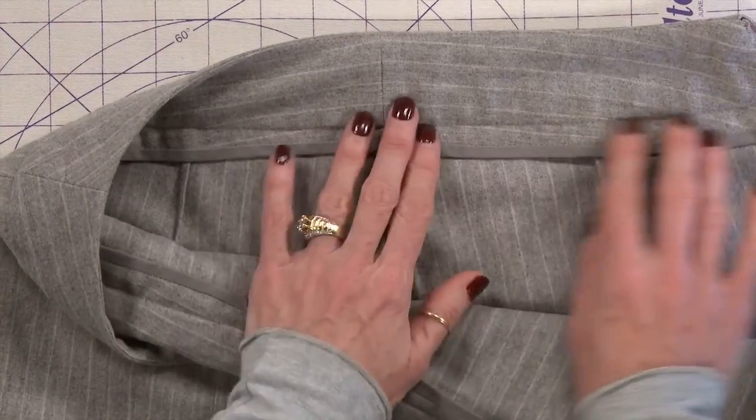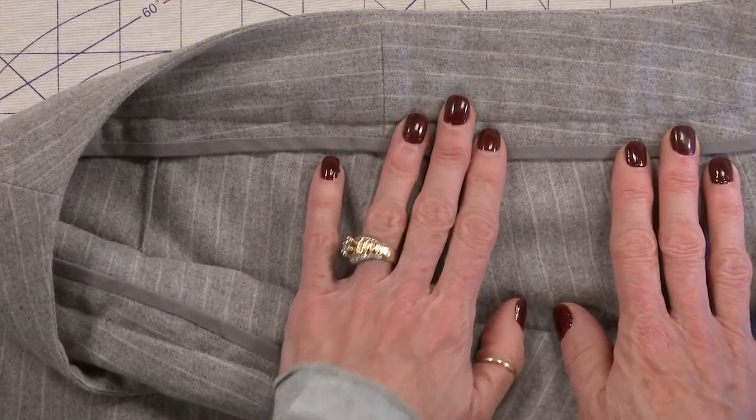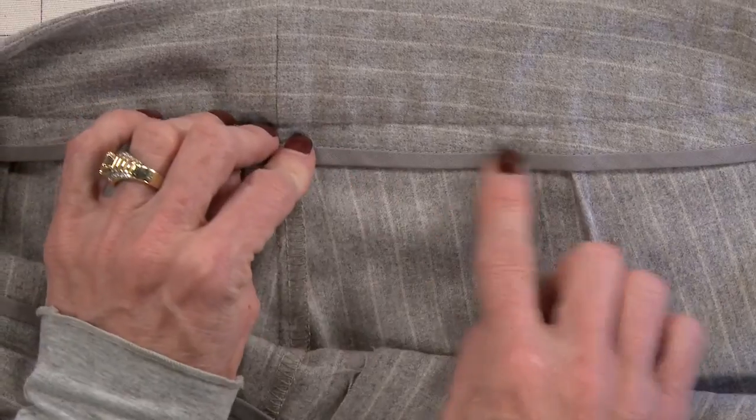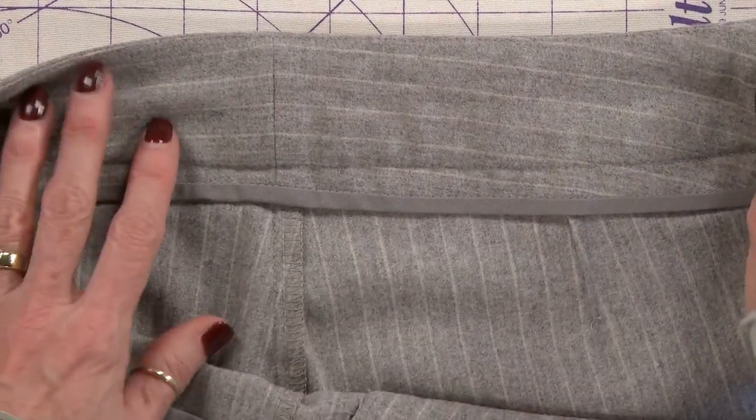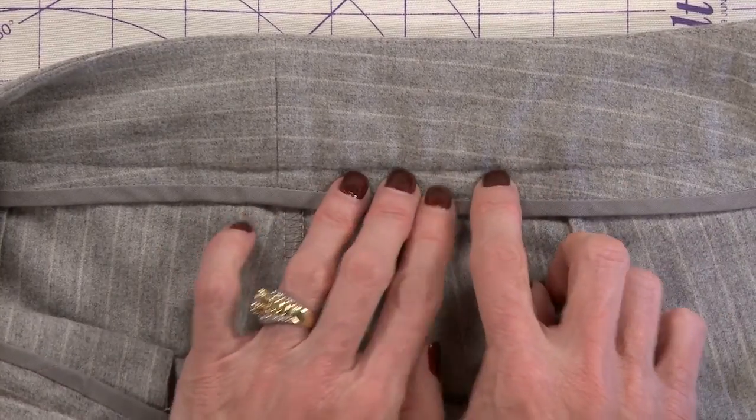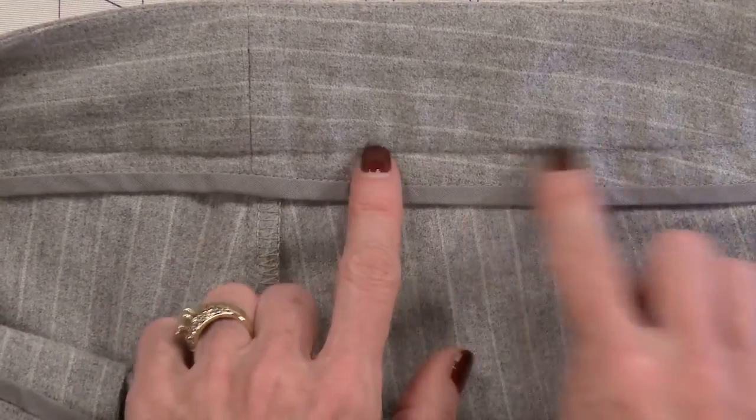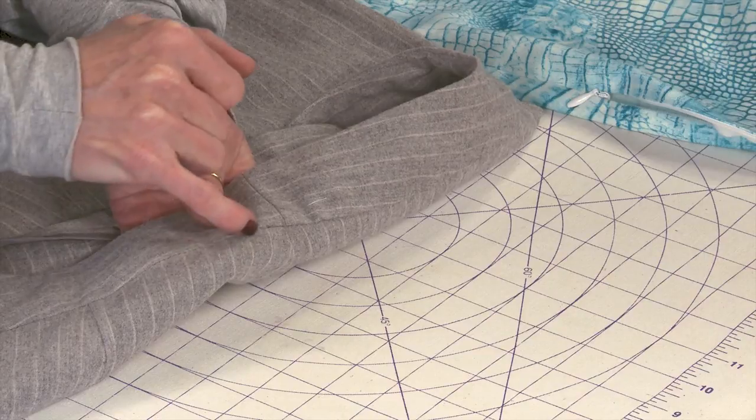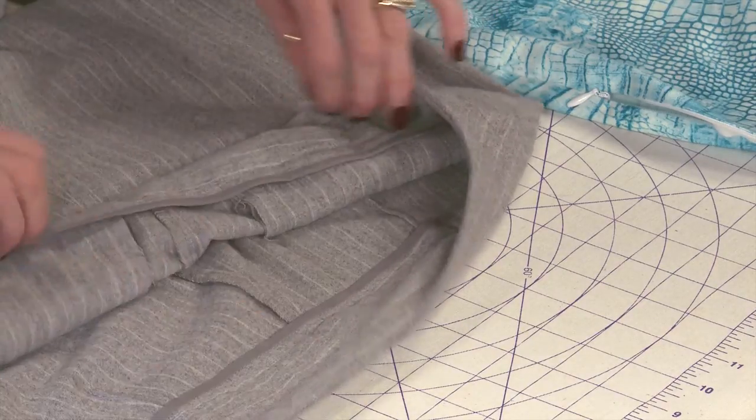You can either press the facing down and finish the edge with a seam binding. This is just a purchased seam binding that you can get at your local fabric store. What I did, in order to save myself a little bit of time, I actually stitched this down. You can't see it from the front side because I stitched right in this little ditch here. So that made it a very quick application.